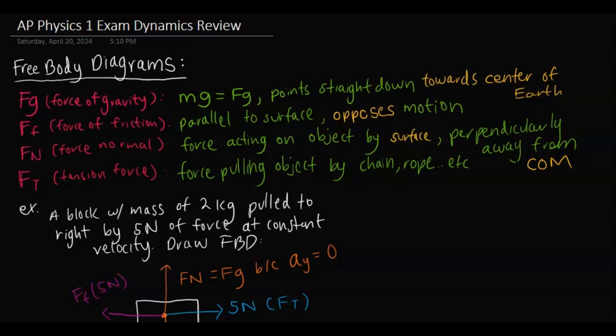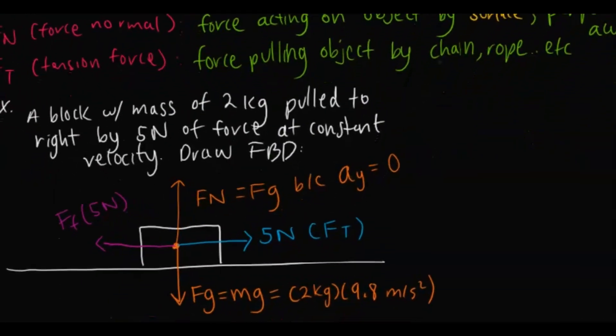There's force of friction, which is parallel to the surface and opposes motion. There's force normal, which is the force acting on the object by the surface, acting perpendicularly away from the center of mass of that object. And then there's tension force, or applied force — basically where a force is pulling the object by a chain, rope, or anything of that sort.